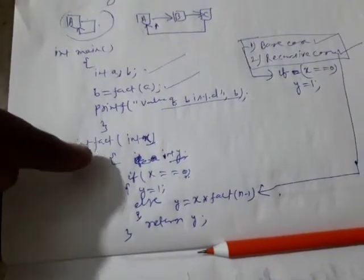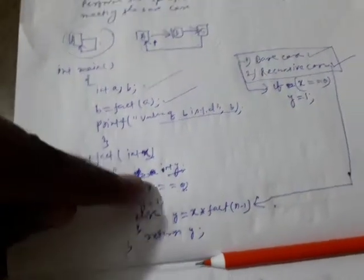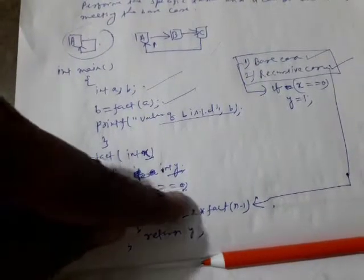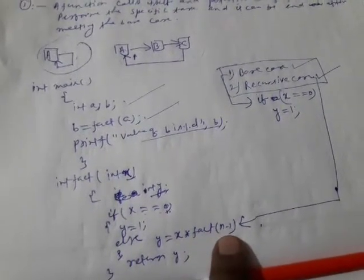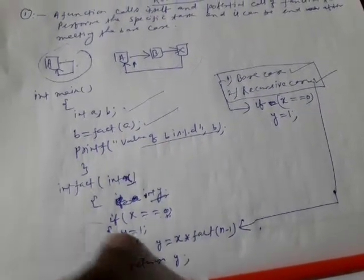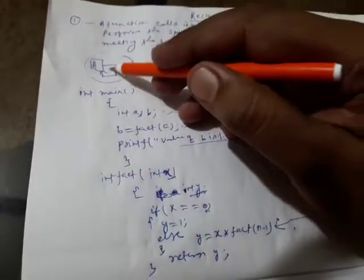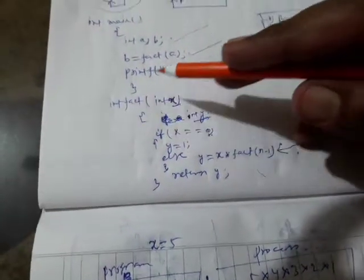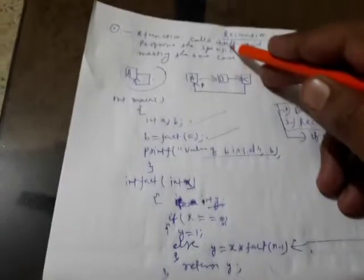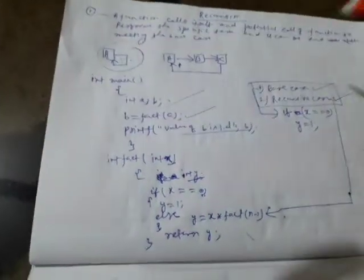Here you can see the example. We have called the factorial function with integer x, and written the condition: if x equals 0, y will be 1; otherwise, y will be x into factorial of x minus 1. This factorial function is calling itself — that is a direct call, where function A calls itself directly.